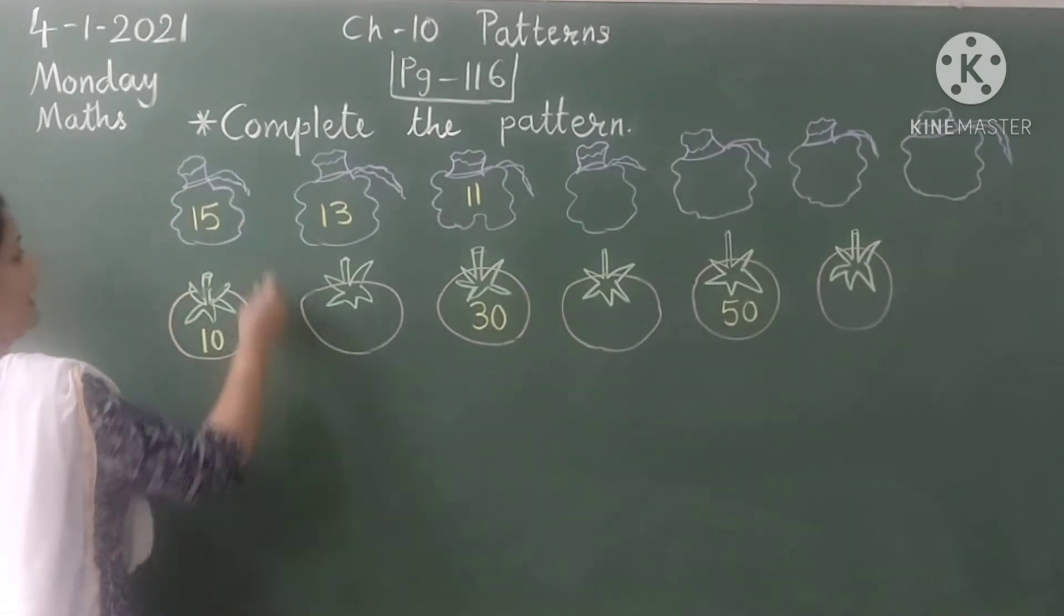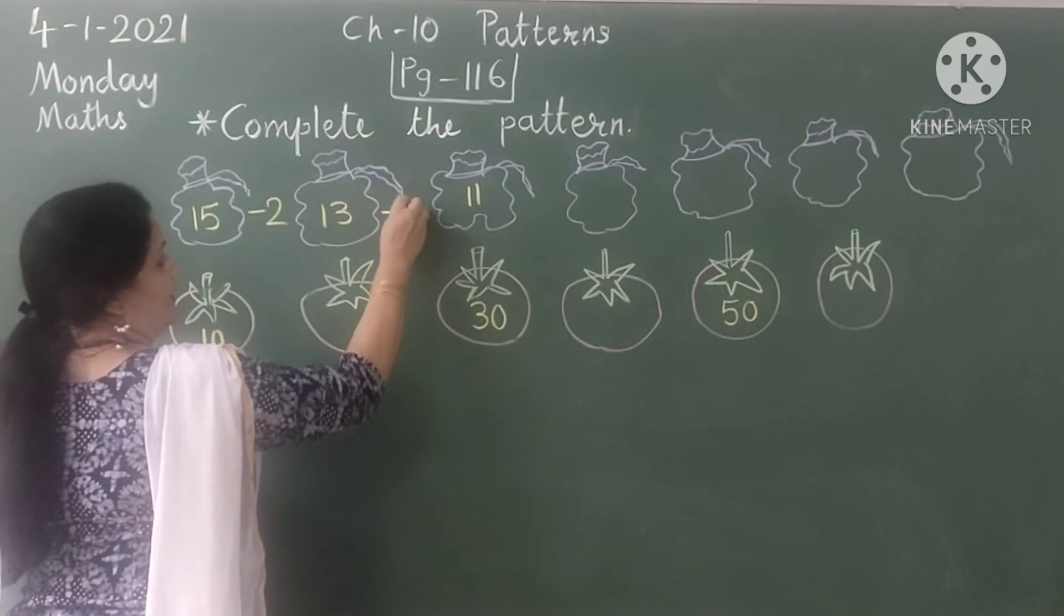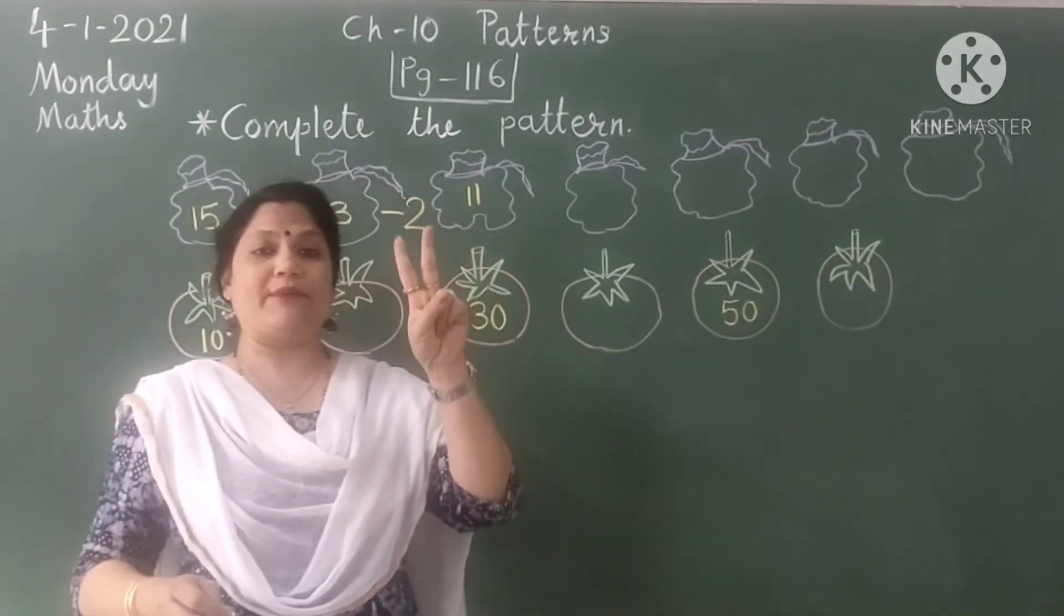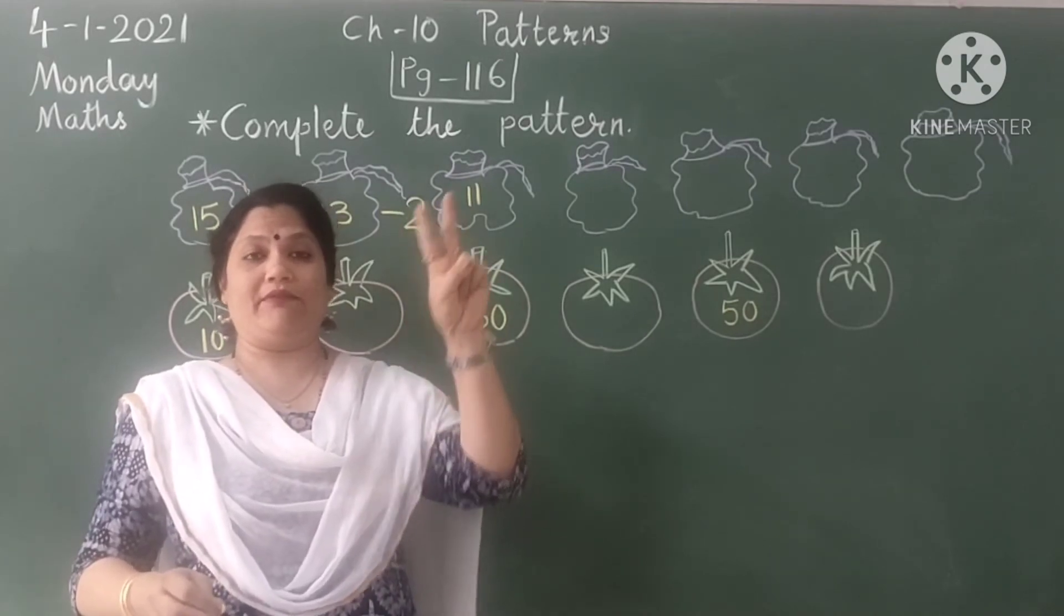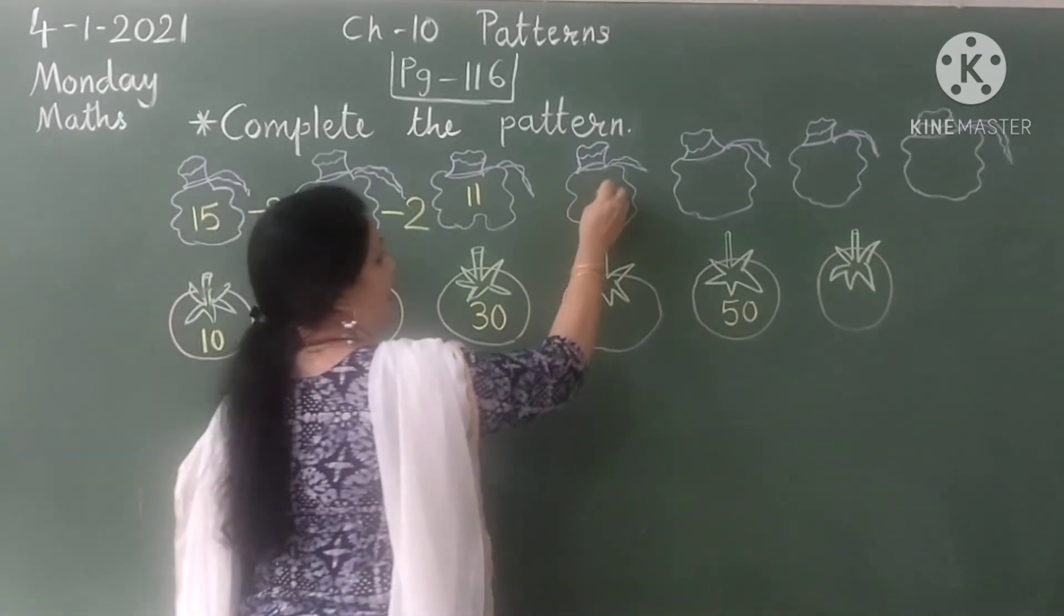So what we have to do? We have to subtract 2 numbers. In 11, let's subtract 2 numbers. Before 11 is 10 and 9. So write down 9 over here.